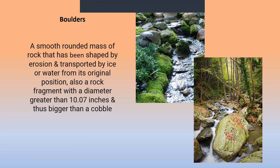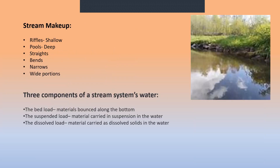Another part of stream anatomy is stream makeup. You have riffles — shallow areas where the water runs faster, often with ripples as it flows over cobble. There are pools, which are deep, slow-moving water and the best place to fish. You have straightaways and bends in the stream, where water is usually slower going into a bend and faster coming out of it. You also have narrow sections, often associated with riffles, and wide sections.